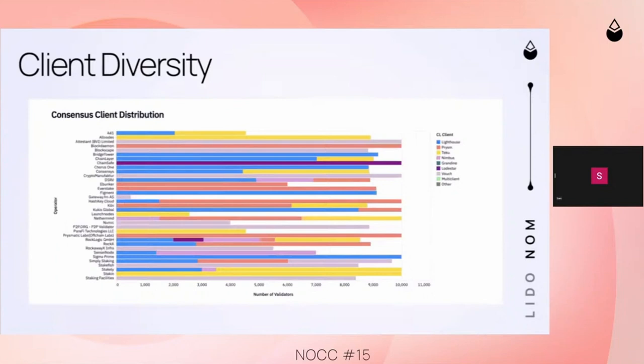We have the consensus client distribution of each individual node operator on a detailed chart. We also have this for the execution layer as well, which might be interesting to look at.